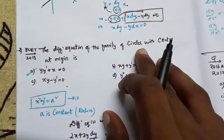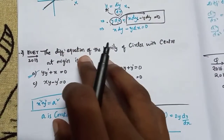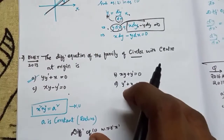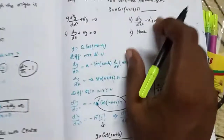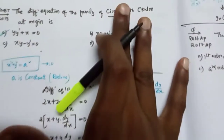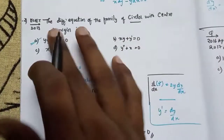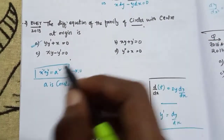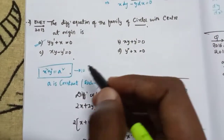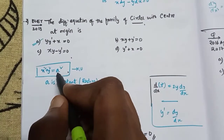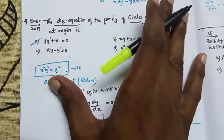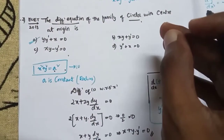Next, the differential equation of the family of curves with center at origin. We have to look at the circle. It is very simple. The formula is x² plus y² is equal to a². Here a is a constant. We remove it to get a differential equation.